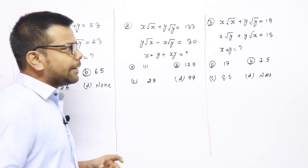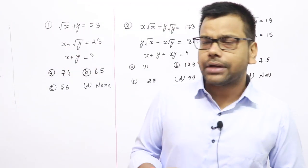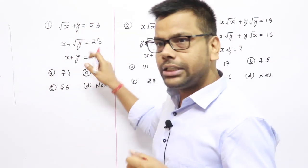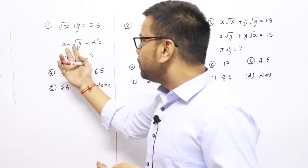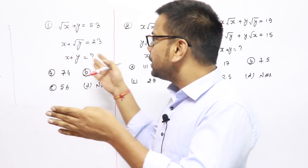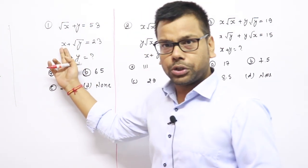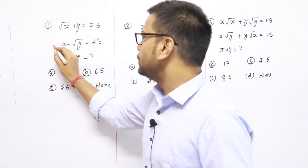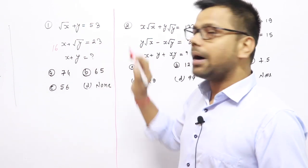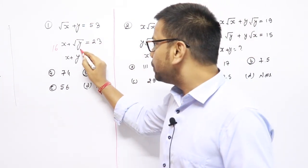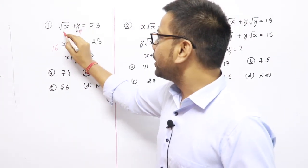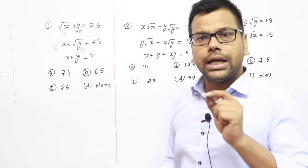When we search for the values, we try to do values identification. So: root x plus y equals 53, and x plus root y equals 23. I want to identify values. The sum of the two numbers is 23. One number is under a root. So it's not 25. I want to work on 16. If I put x = 16 here, then 16 plus something equals 23.